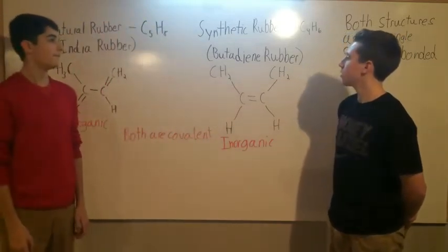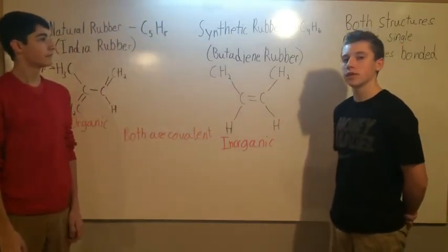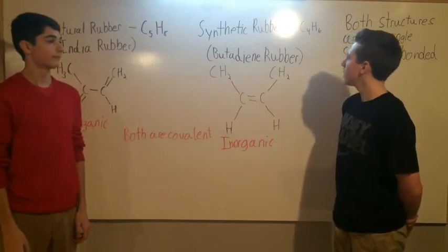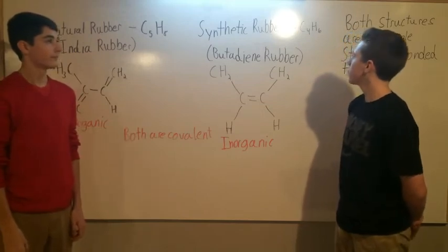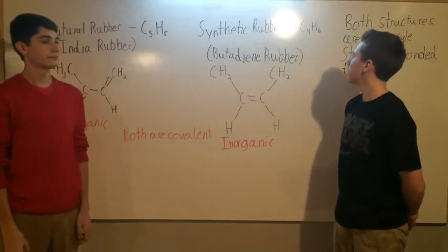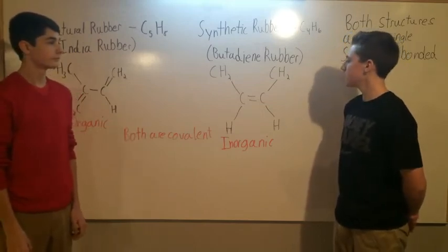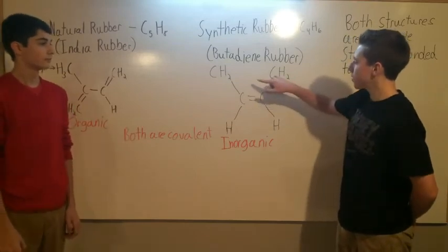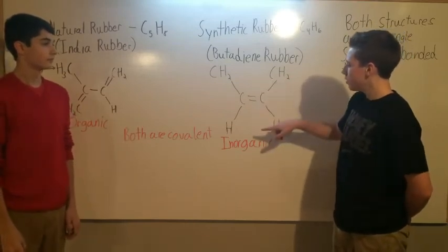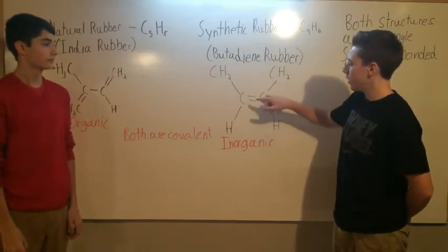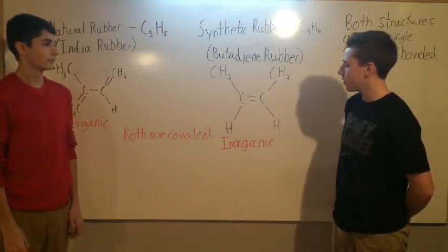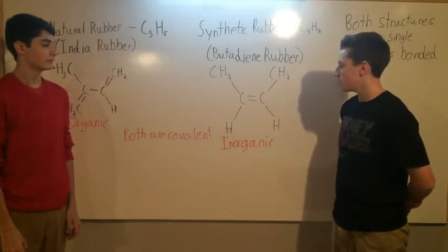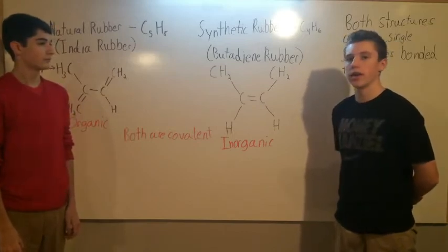Next, we have synthetic rubber, also known as butadiene rubber, with a chemical formula of C4H6. The structure includes two ethylenes, two hydrogens, and two carbons right in the middle, and it is not carbon-based, so it is inorganic.